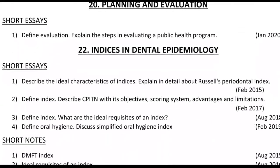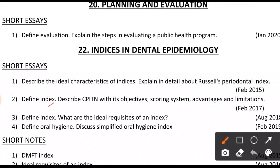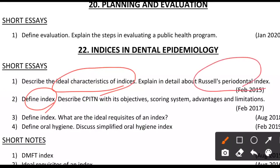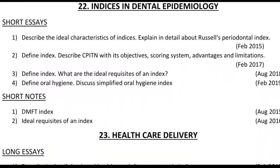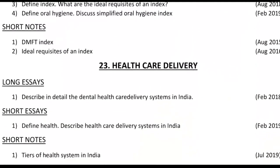Indices are very important and also relevant to practical sessions. Common questions always include the definition of an index and ideal properties or characteristics of an index. Most commonly asked indices are Russell's index, CPITN index, OHI index, Dean's fluorosis index, and DMFT index. When a question is asked about any index, write the definition, ideal requisites, and classification if applicable.